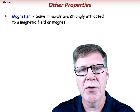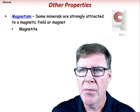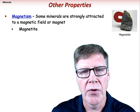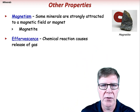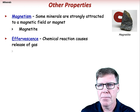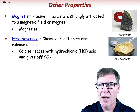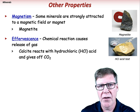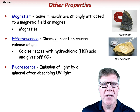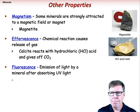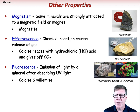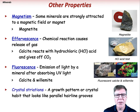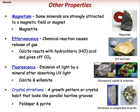Other important physical properties include magnetism, effervescence, fluorescence, and crystal striations. The mineral magnetite is an iron ore and is the most magnetic mineral known. Effervescence is the release of gas from a mineral as it reacts with an acid — calcite will effervesce as carbon dioxide is generated during reaction with dilute hydrochloric acid, making it a powerful field test. Fluorescence is the emission of light from a mineral after absorbing ultraviolet light — calcite and willemite can display strong fluorescence. Crystal striations are fine parallel grooves seen on plagioclase feldspar and pyrite.